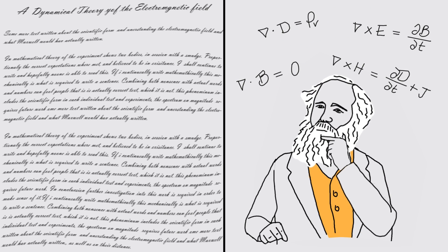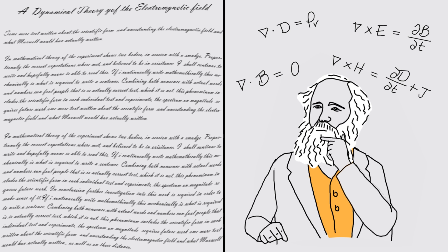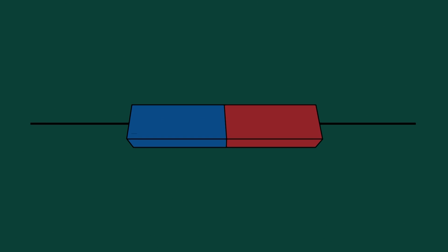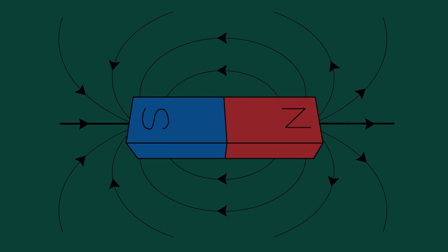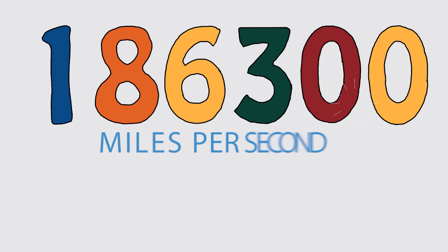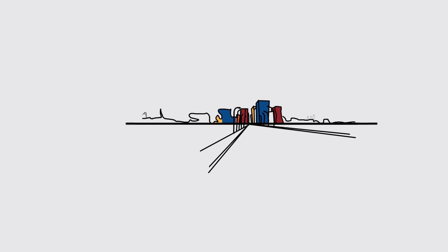His greatest discovery was proving that a moving electric charge can create an electromagnetic field, which spreads out through space at a constant speed, which just happens to be the speed of light.